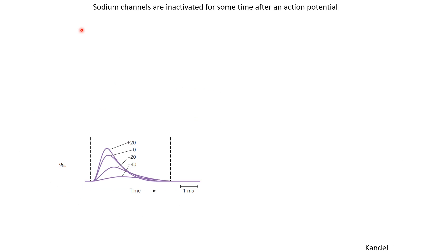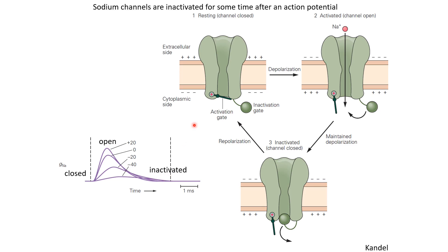One interesting property of the voltage-gated sodium channels is that they get into an inactivated state. If we look at the voltage-gated sodium conductance as a function of time for different values of voltages: when we increase the voltage, the sodium conductance increases, but after that it gets into an inactive state. In terms of molecular structure, an ion channel may be in a closed state, and then when there is depolarization the channel opens. But after that, it does not go back into the same closed state — rather, a blocking particle comes and blocks the channel so that it becomes inactivated and is not available for opening. It takes some time before it can return to the normal closed state and become available for opening again. This inactivation has some very interesting effects on the neuron.